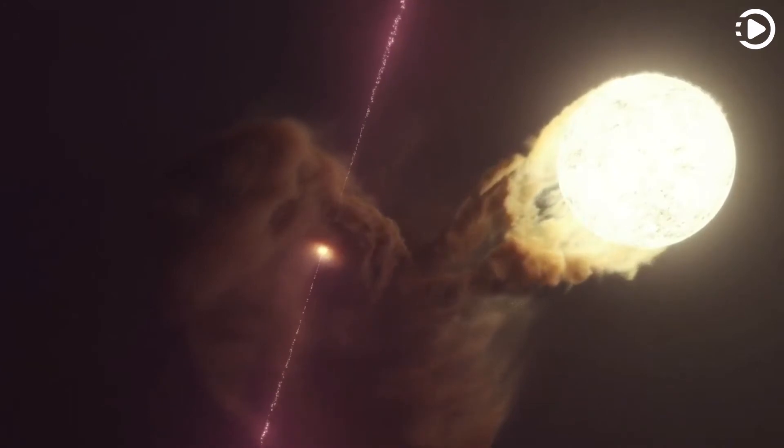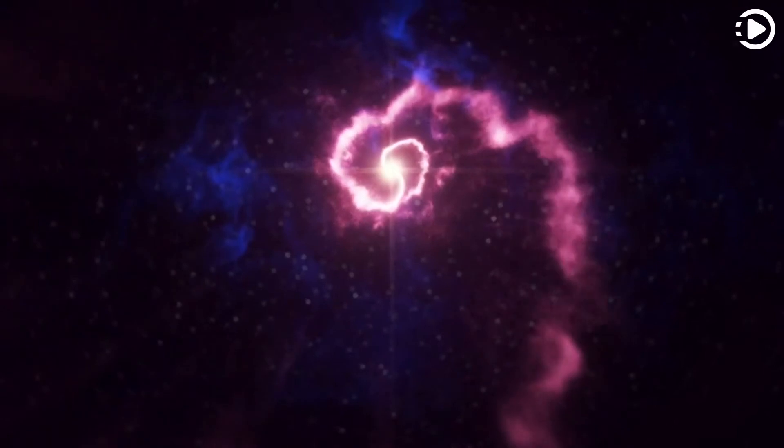A few years ago, SS 433 was unexpectedly found by the HAWK detector array in Mexico to emit unusually high energy, TEV range, gamma rays.